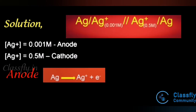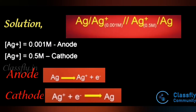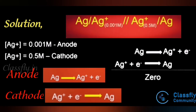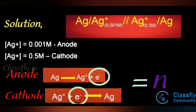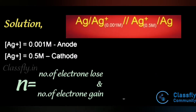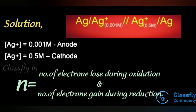At the anode, Ag → Ag⁺ + 1e⁻ (oxidation). At the cathode, Ag⁺ + 1e⁻ → Ag (reduction). The net cell reaction is zero, which is expected for a concentration cell. The number of electrons transferred, n, equals the electrons lost during oxidation and gained during reduction, so n = 1.